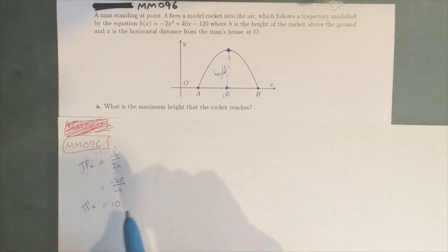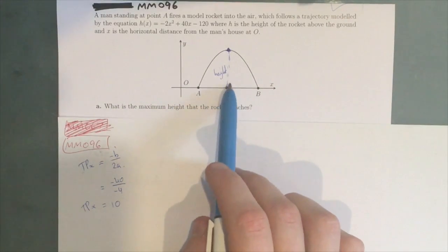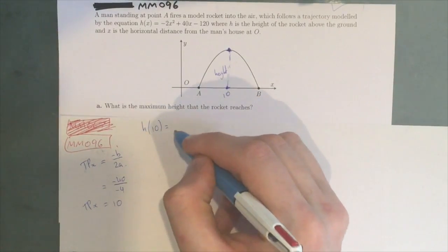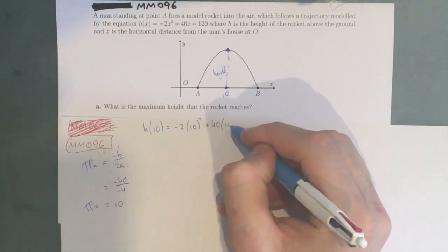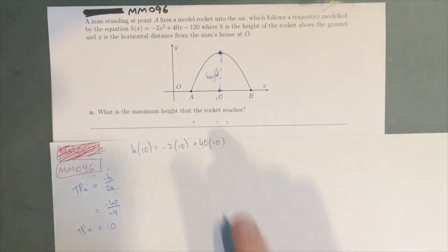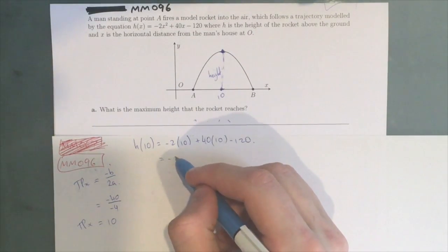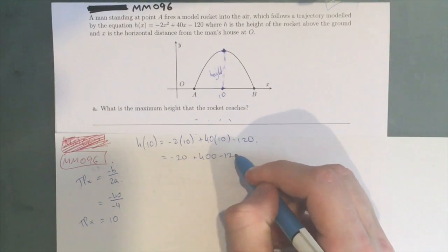However, that is not our answer. We're looking for the height of the rocket, not the horizontal distance at that point. So from here we can sub 10 in for x, which gives us -2(10²) + 40(10) - 120.